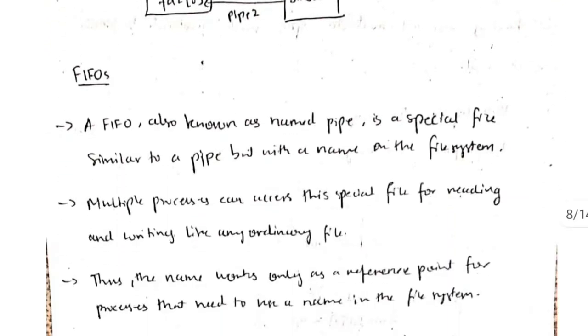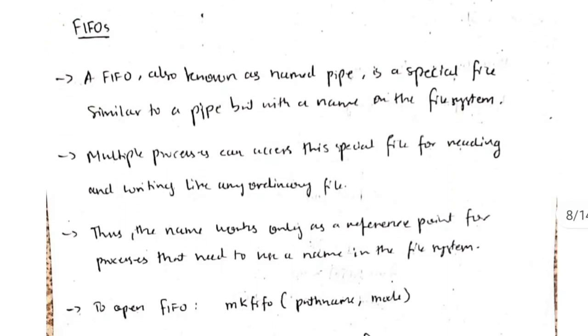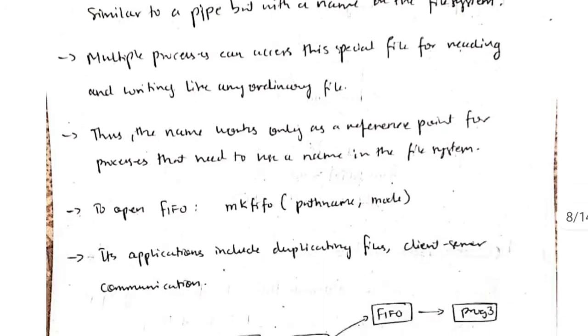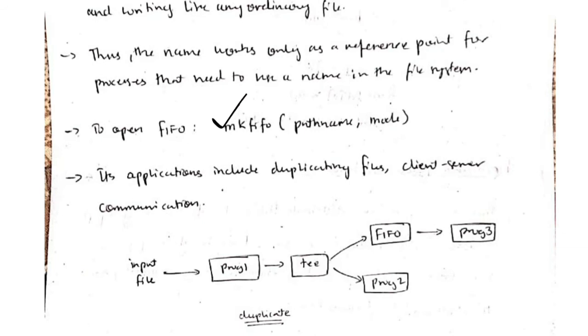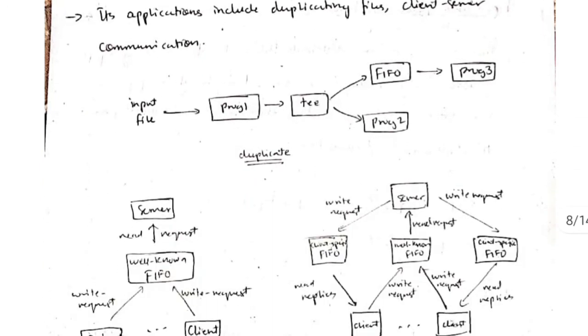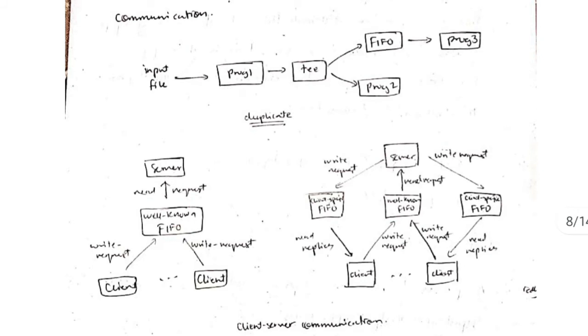FIFO is another name of the pipe. It has a special file inside the memory by using which we can implement the features of pipe. This is the function to open the FIFO. We have the main users like client-server communication here by using FIFO and also the duplication of the file through the FIFO program.